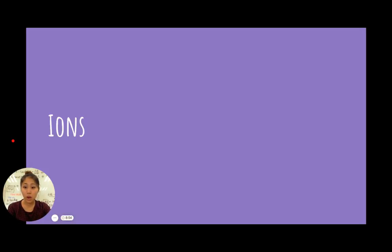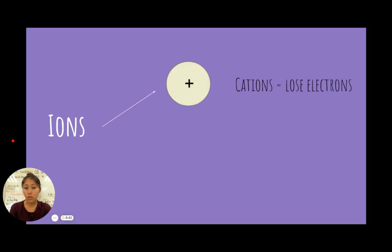Ions, as we know, are charged particles. This means that the atoms on the periodic table now have a charge. If they are charged, then they are able to form bonds. We learned that there are positively charged ions known as cations. They lose electrons. There are also negatively charged ions known as anions. This means that they gain electrons.